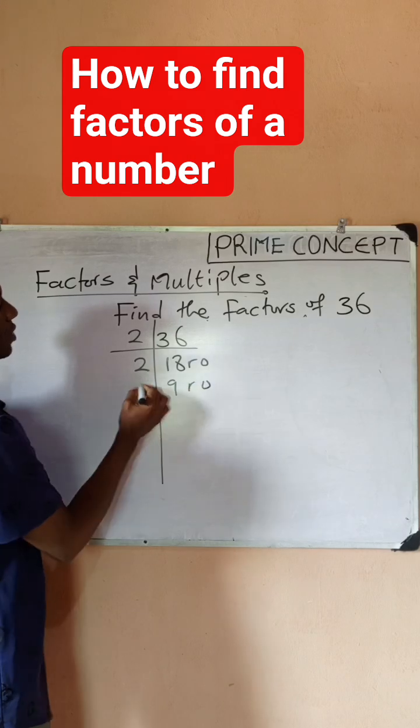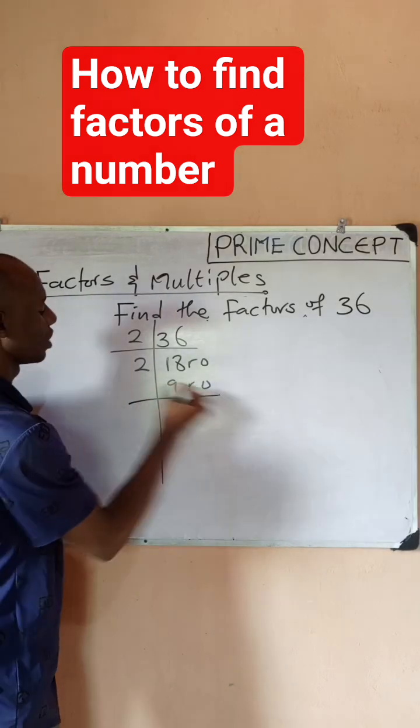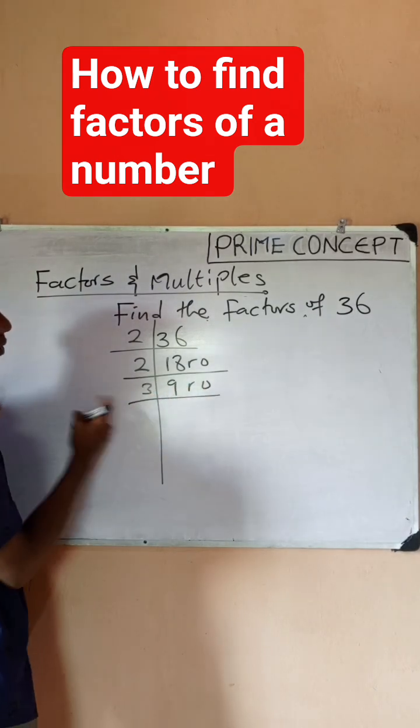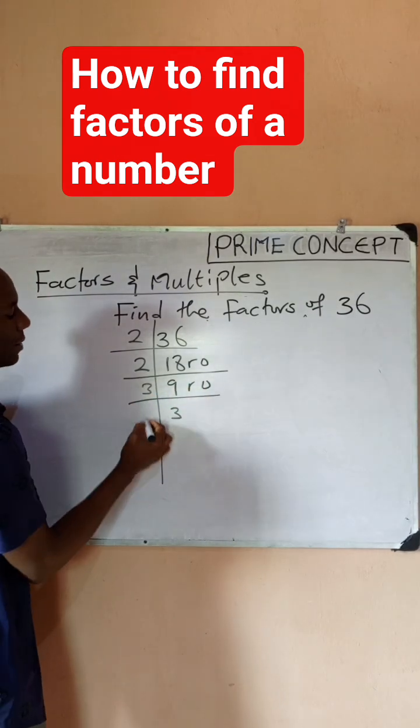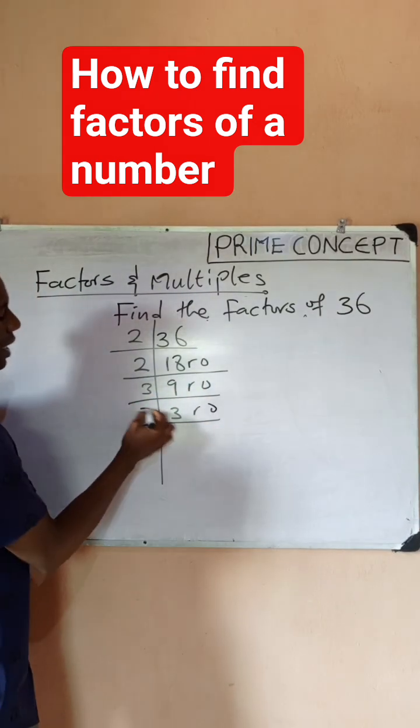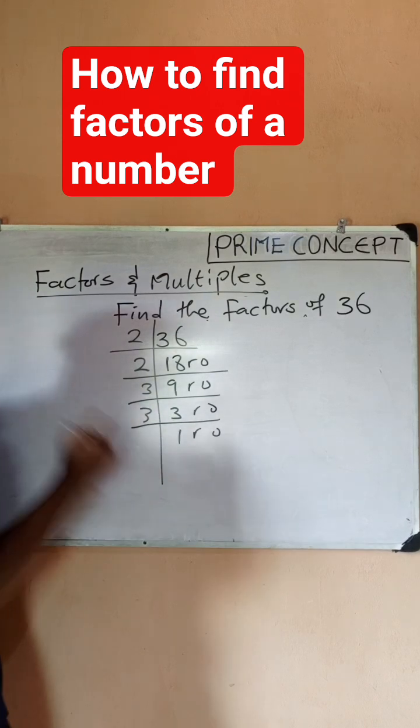There's no remainder. 2 can no longer go in 9, so I would switch to the next. I would say 3. 3 in 9 is 3, there's no remainder. 3 in 3 is 1, there's no remainder.